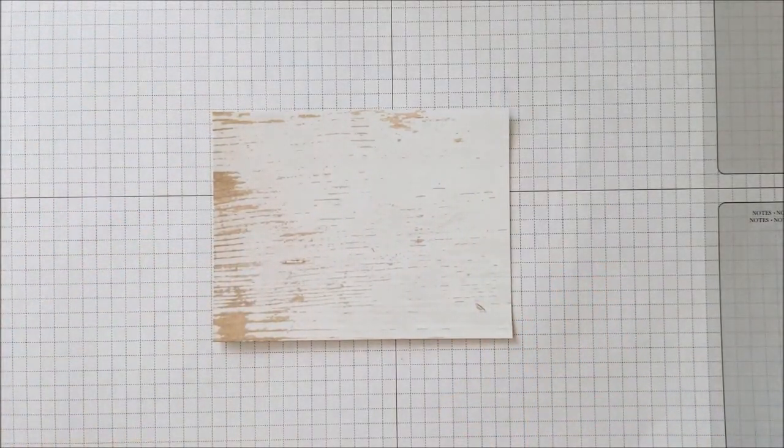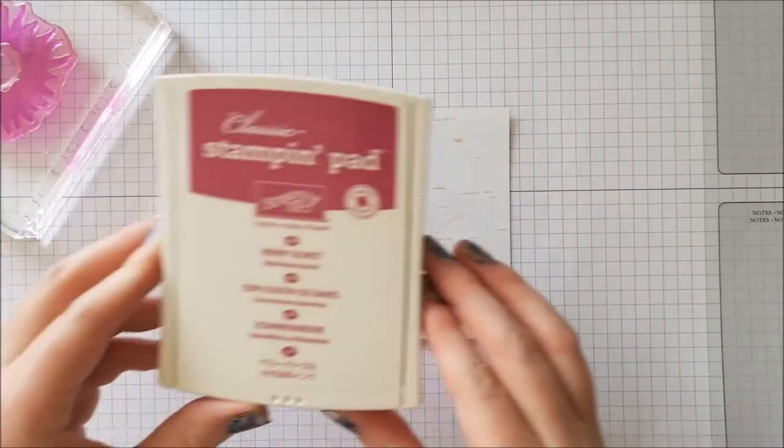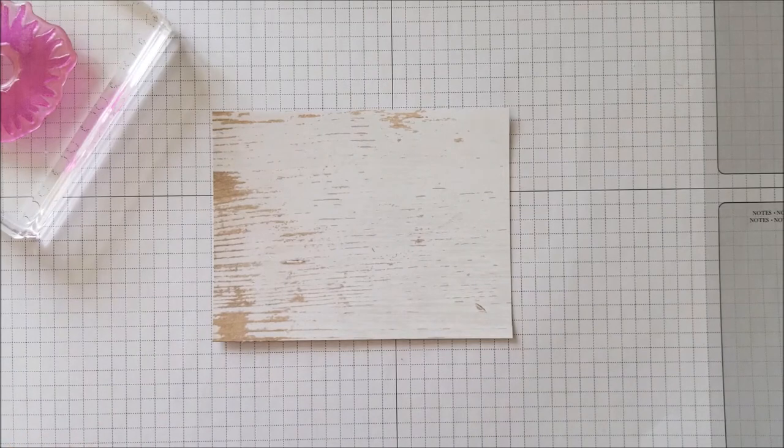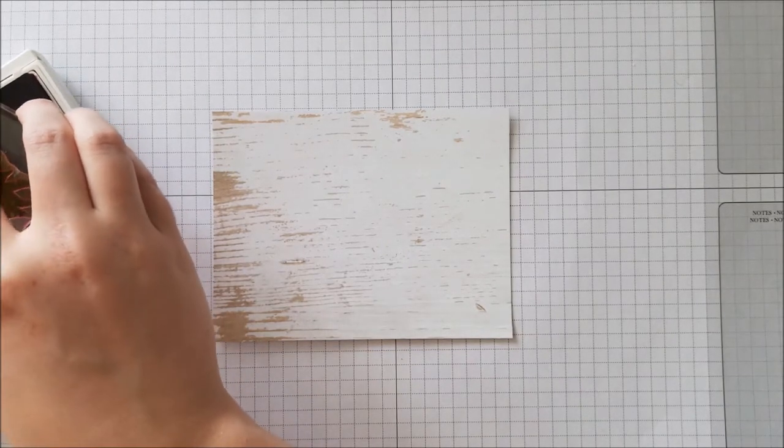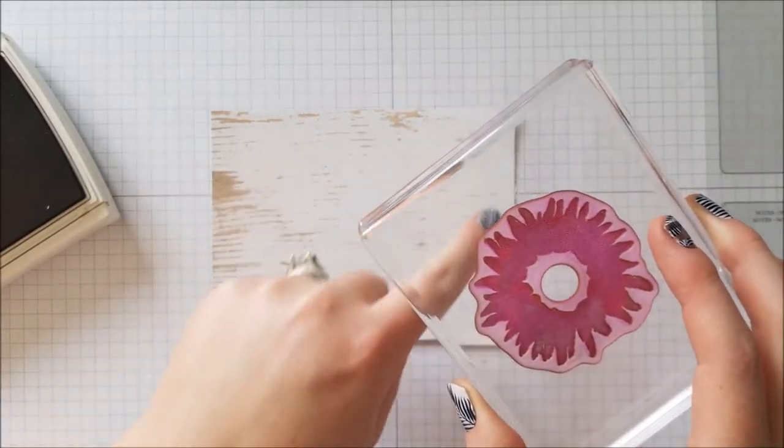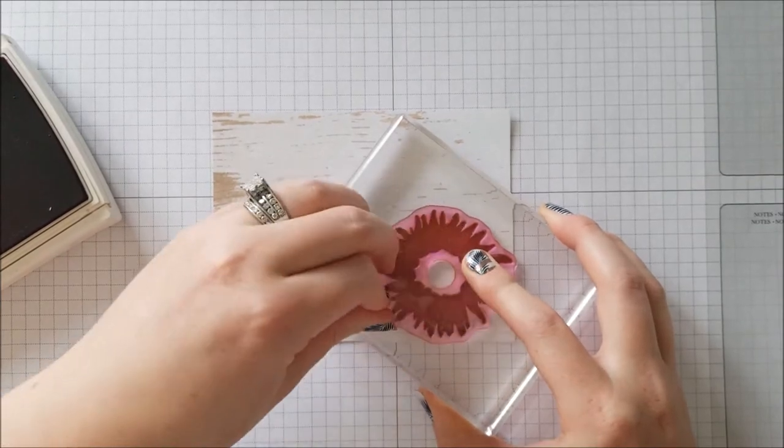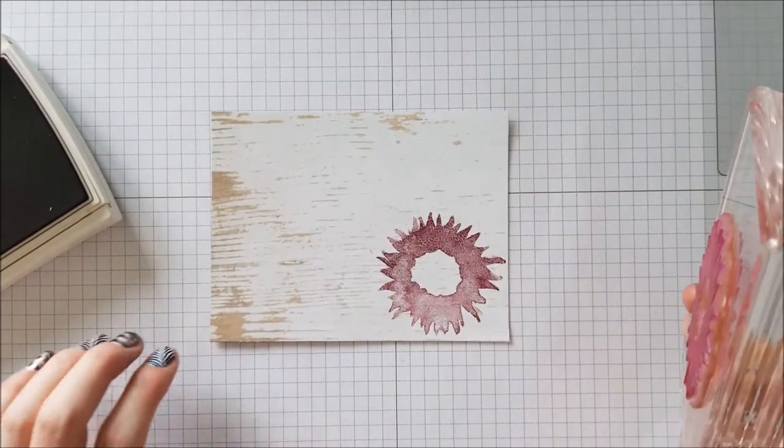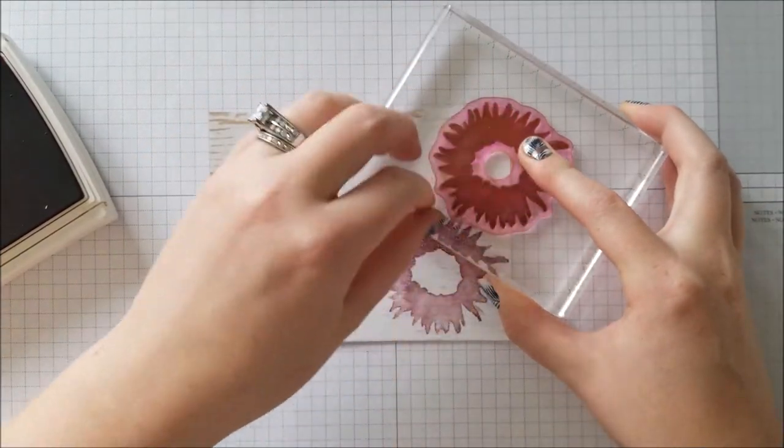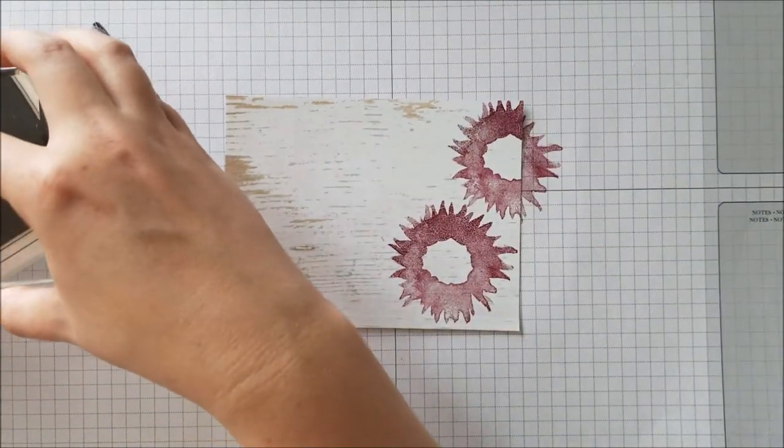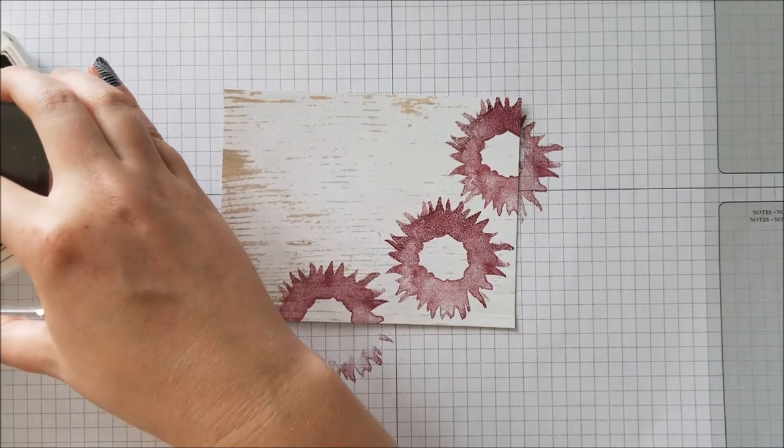So to start we will use from the Painted Harvest set this piece here, which I refer to as the thicker of the flower pieces in that set, and we're going to use Berry Burst. We'll go ahead and ink up the stamp. And we're going to stamp in an arc this way. So I'm going to start with the one that's going to be fully on the paper, which is going to be down in this corner, applying even pressure to make sure the whole image gets stamped. And then we're going to do a couple more. So we'll do one maybe about half up on this corner, and then we'll do about another one and a half. So we'll do another half down here and just a teeny tiny little corner piece over here.